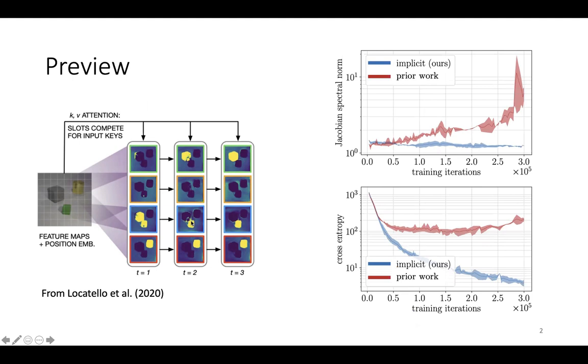As we can see on the right, the Jacobian norm of our method in blue remains stable and trains much more effectively than vanilla slot attention in red.